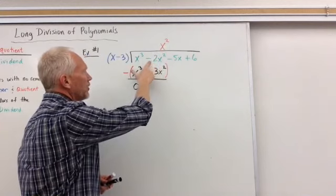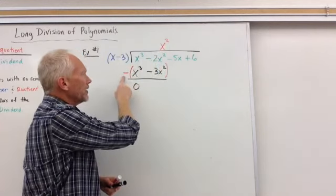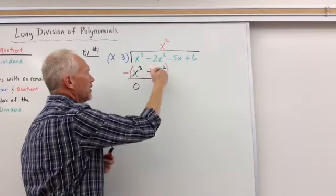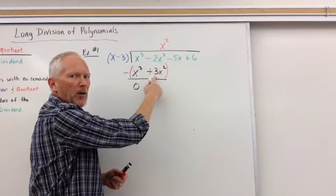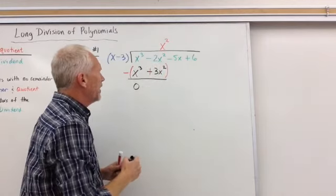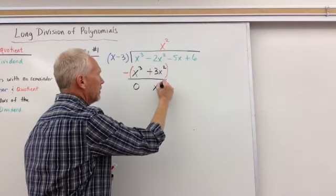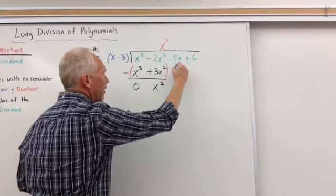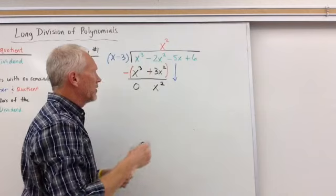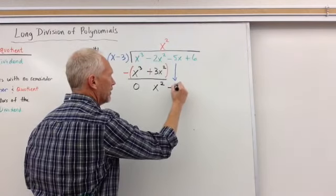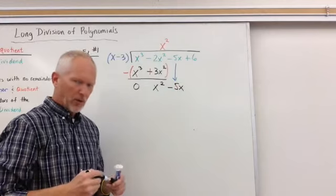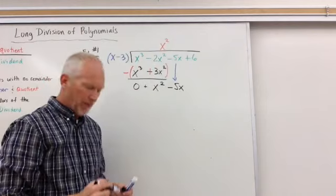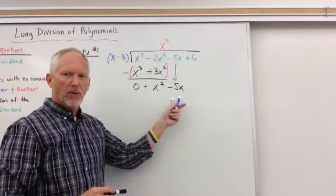And then, negative 2x squared minus a minus. Well, this sign will change that to a plus. So now I have negative 2x squared plus 3x squared gives me an x squared. Gives me an x squared. Now I do the next step. Bring down that negative 5x. So now I've got negative 5x there. So this 0 will just go away, obviously. And so now we're dividing into x squared minus 5x.